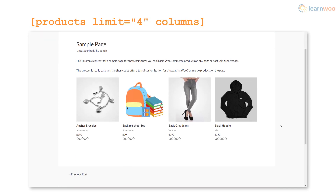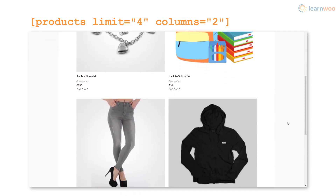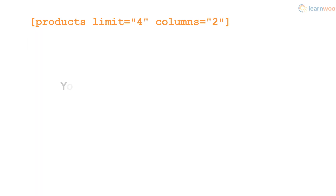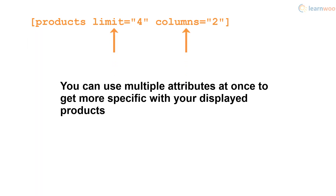The columns attribute lets us choose the number of columns. Its default value is four — let's make it two. As you can see, you can use multiple attributes at once to get more specific with your displayed products.